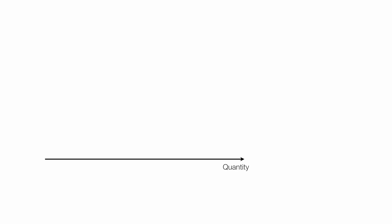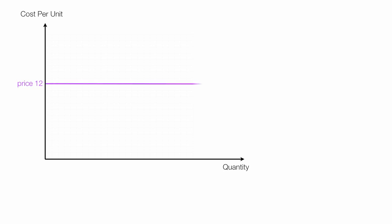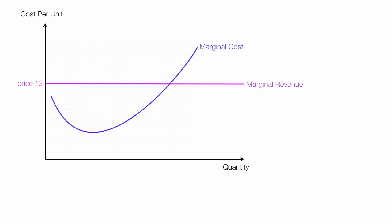On the horizontal axis I'll plot quantity, and on the vertical axis I will plot cost per unit. I'm going to use a price of 12 — it could be 12 pounds, $12, or 12 anything — but this is a price of 12. Since the individual supplier is a price taker, price and marginal revenue are the same. I'll draw on the marginal cost curve, the average total cost curve, and also the average variable cost curve.